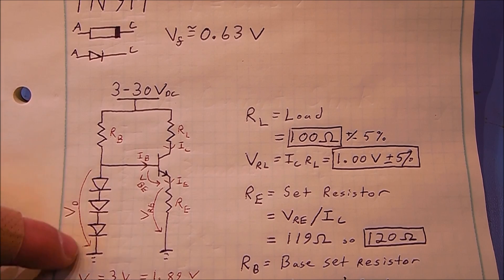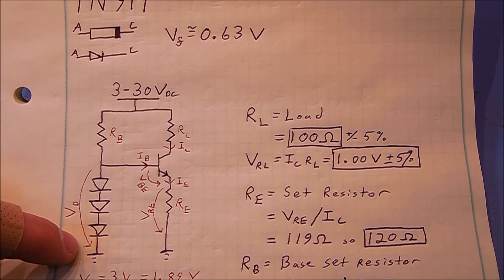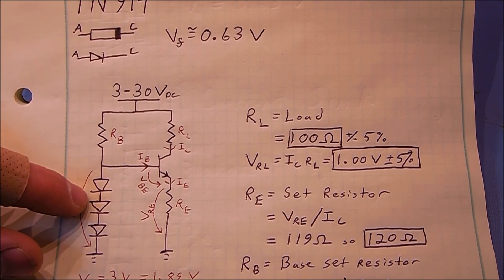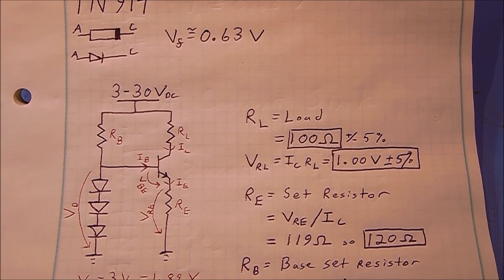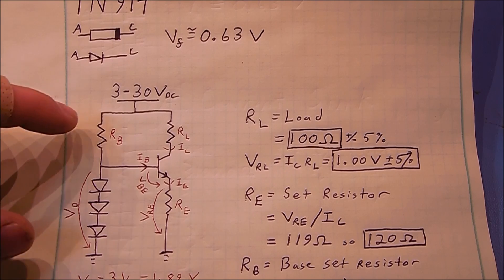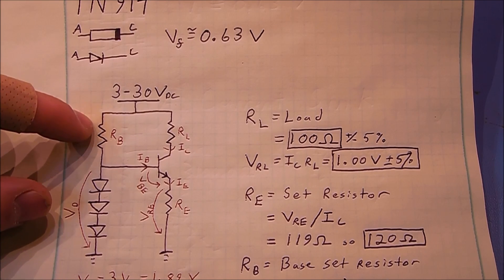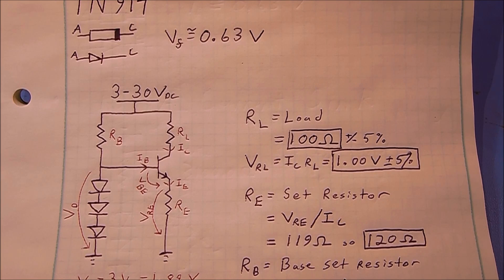Arbitrarily, I choose to have 1 milliamp flowing through these diodes. We take 3 volts divided by 1 milliamp, which gives us a 3,000 ohm resistor. Just to be safe, the smaller you make that resistor, the better performance you might have. I chose this resistor to be 2.2k ohms.